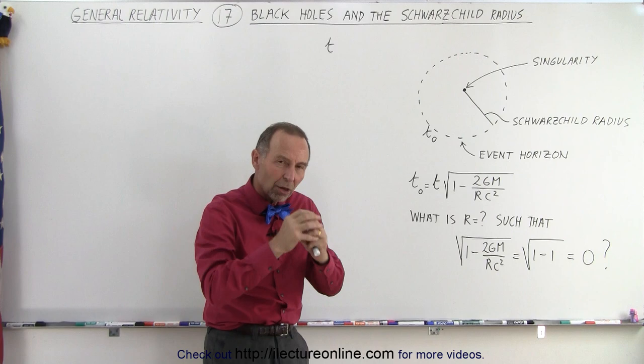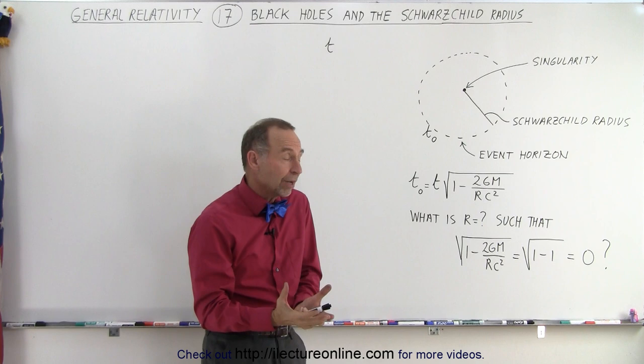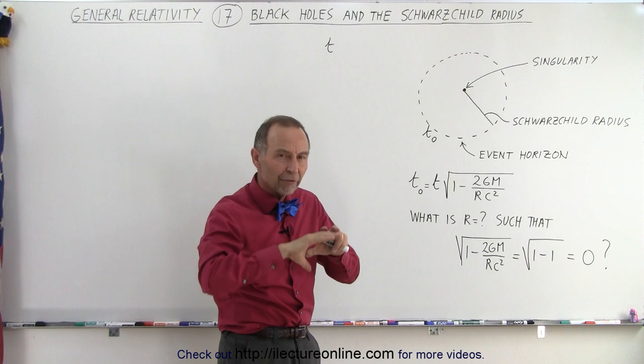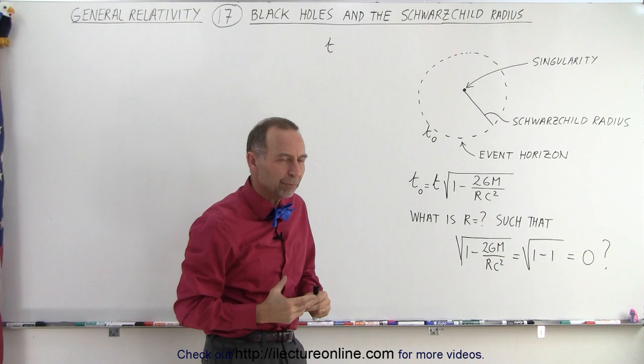If enough mass was pushed into a small enough volume, then there would be a region around it called the event horizon, and the event horizon would be at a distance called the Schwarzschild radius where time would literally stand still and nothing could escape the gravitational pull of that entity, whatever that entity was. And so we called it a black hole since light could not escape from it.